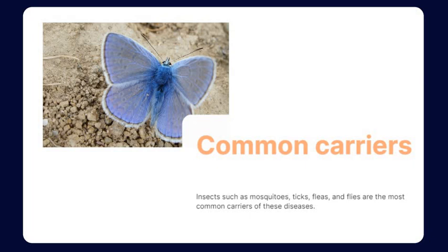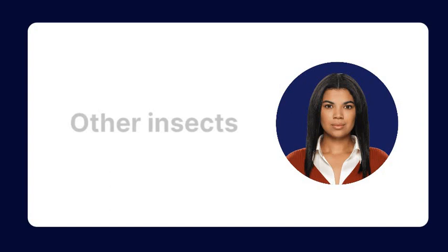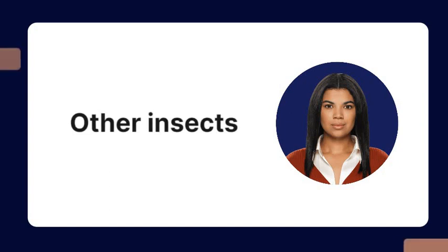For example, many mosquitoes and ticks carry blood-borne pathogens that they can spread by biting humans. Other insects, such as flies, spread pathogens through contaminated food or water sources.